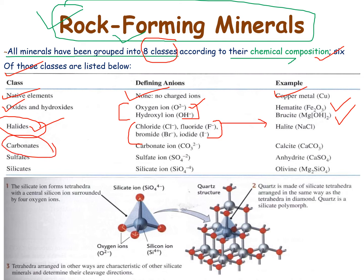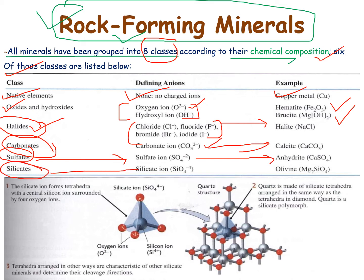The fourth class is carbonates, where we can see the CO₃²⁻ anion, which gives rise to calcite. The fifth is sulfates, having the anion SO₄²⁻, which gives rise to anhydrite — calcium sulfate. The sixth class is silicate minerals, which give rise to silicate ions; an example is pyroxene, which is present in the mantle of our Earth's crust.